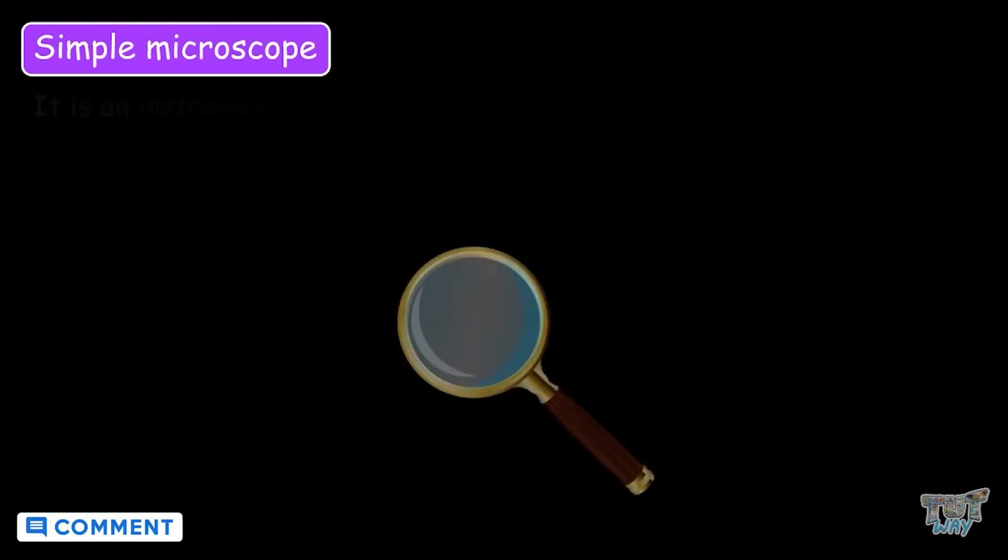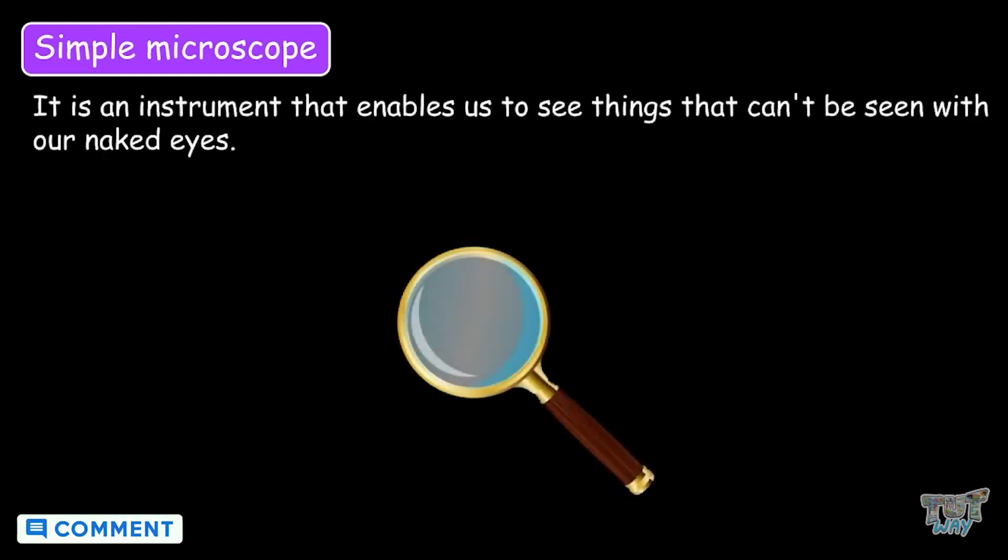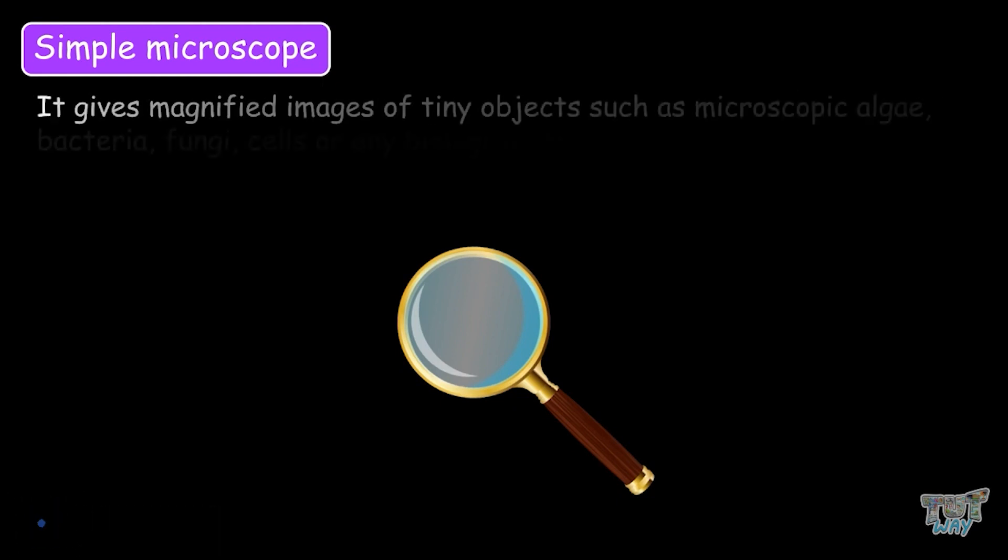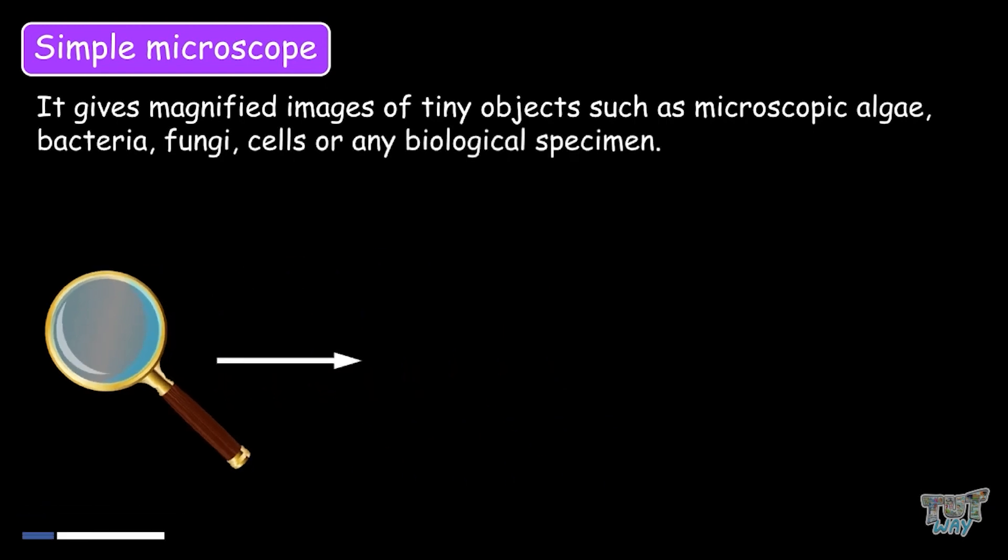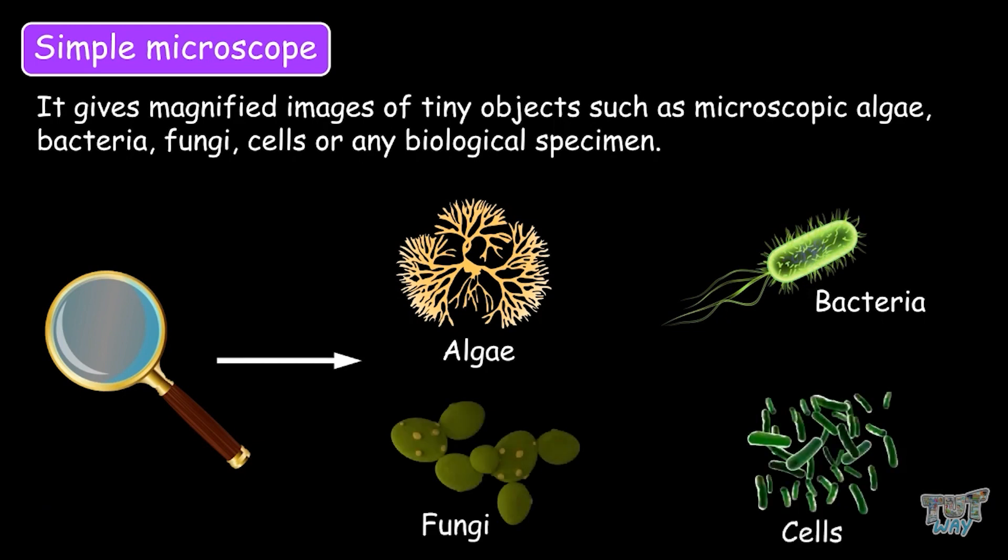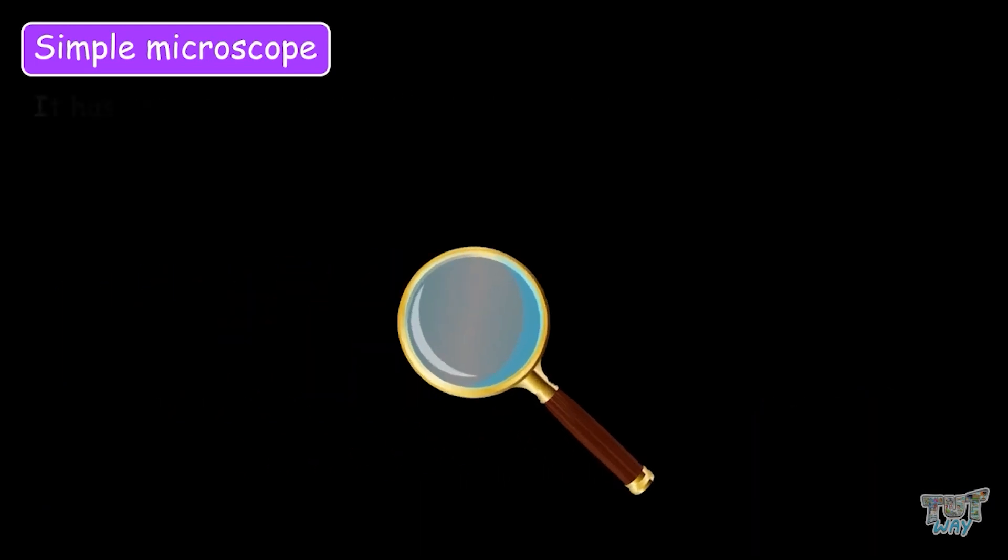Simple microscope: This is an instrument that enables us to see things that cannot be seen with our naked eyes. It gives a magnified image of tiny objects such as microscopic algae, bacteria, fungi, cells, or any biological specimen.